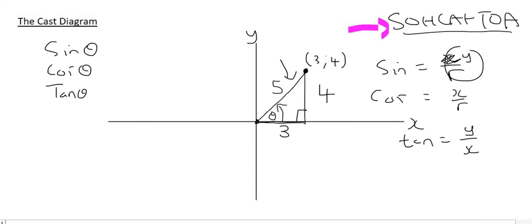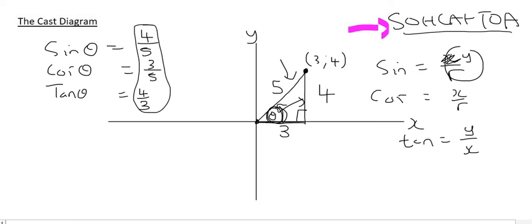So let's work out sin theta. Sin is opposite over hypotenuse, and the angle we're using is theta. The opposite is 4, over the hypotenuse of 5. Cos is the adjacent, which is 3, over the hypotenuse of 5. And tan is the opposite, 4, over the adjacent, 3. In summary, all three of these answers are positive, so in this first quadrant, sin, cos, and tan are all positive.